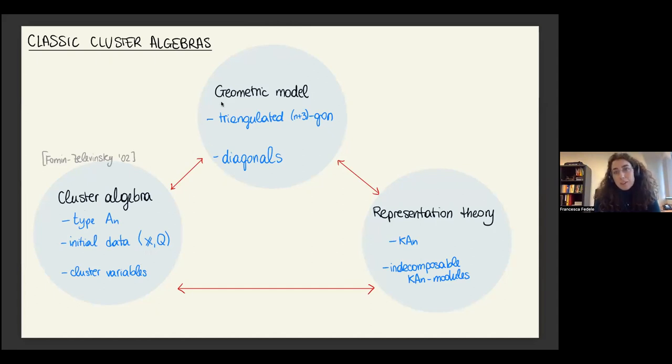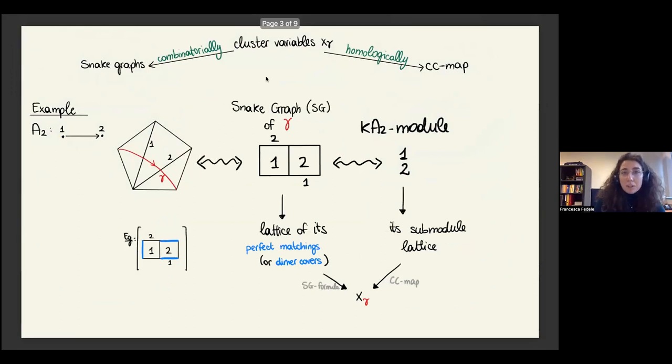There is a geometric model and a representation theory interpretation. For type A, the geometric model consists of an n plus 3 gon which comes with some initial triangulation, and the diagonals of this polygon correspond to the cluster variables. From the representation theory point of view, you look at the path algebra of type A over some algebraically closed field K, and the indecomposable KN modules correspond to the cluster variables. These two interpretations are very important because they permit you to compute the cluster variables in a more direct way.